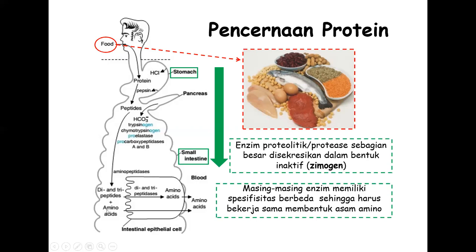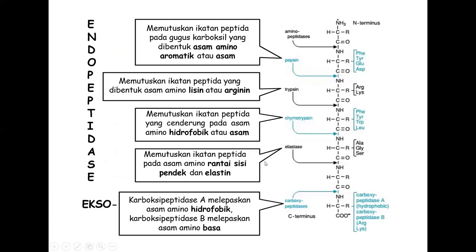Peptida yang belum terpotong sempurna oleh pepsin di lambung akan menjadi asam amino tunggal, atau dipeptida, atau tripeptida yang bisa diserap masuk ke epitel usus halus. Di dalam sel epitel, dipeptida dan tripeptida akan dipotong lagi menjadi asam amino tunggal, yang kemudian bisa beredar ke pembuluh darah dan masuk ke sel-sel yang membutuhkan. Enzim endopeptidase bisa memutuskan ikatan peptida dari tengah, sedangkan eksopeptidase melepaskan asam amino hidrofobik atau yang bersifat basa.